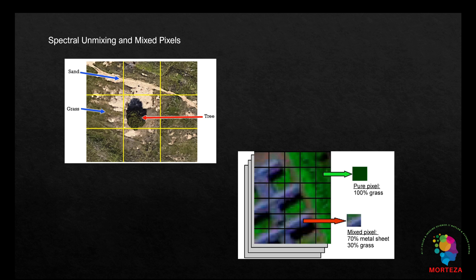The problem arises when trying to extract meaningful information from these mixed pixels as the true spectral signature of each material is no longer visible.